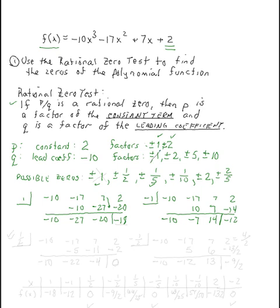Let's try x=1/2. Lining up the coefficients: negative 10, negative 17, 7, and 2. Bring down negative 10; negative 10 times 1/2 is negative 5; adding gives negative 22; one half of negative 22 is negative 11; adding gives negative 4; one half of negative 4 is negative 2; 2 plus negative 2 is 0. We have found a zero — it's x=1/2! We only have 9 more to go through.